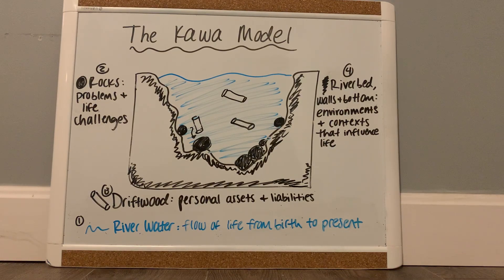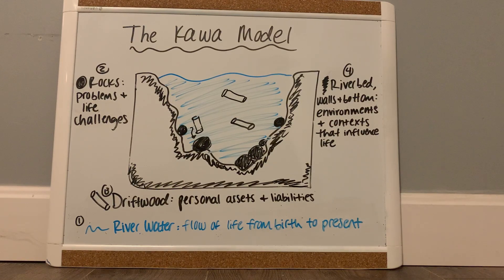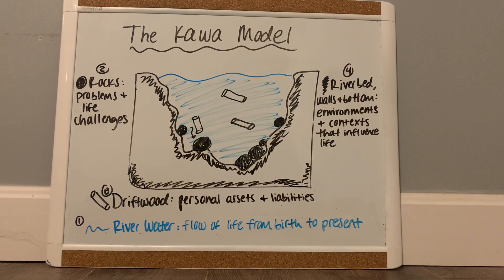This picture illustrates the four main elements of the Kawa model and how they are interpreted in occupational therapy practice. Each element represents a specific aspect of the client's life. The client is not included as an element. The Kawa model uses a river metaphor to explain how a client exists within the interactions between all the elements. Kawa means river in Japanese, so that's why it is called the Kawa model.